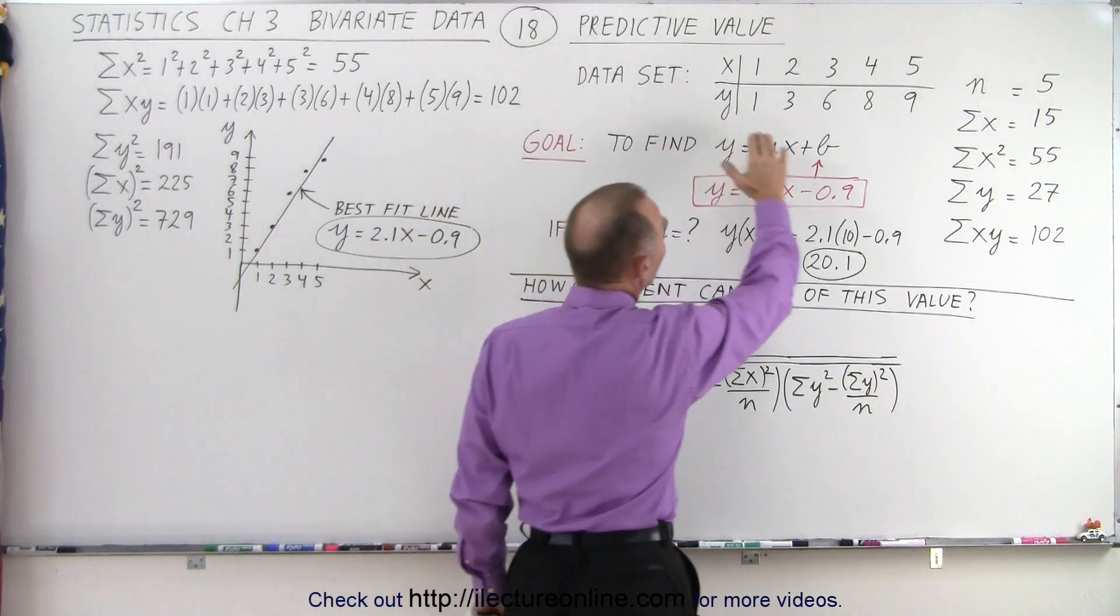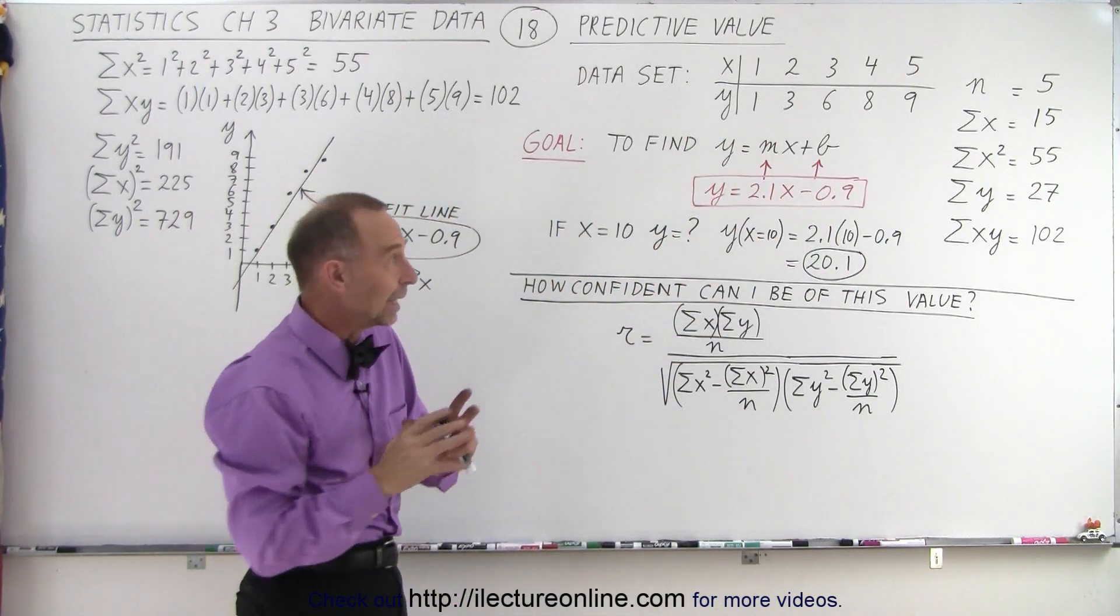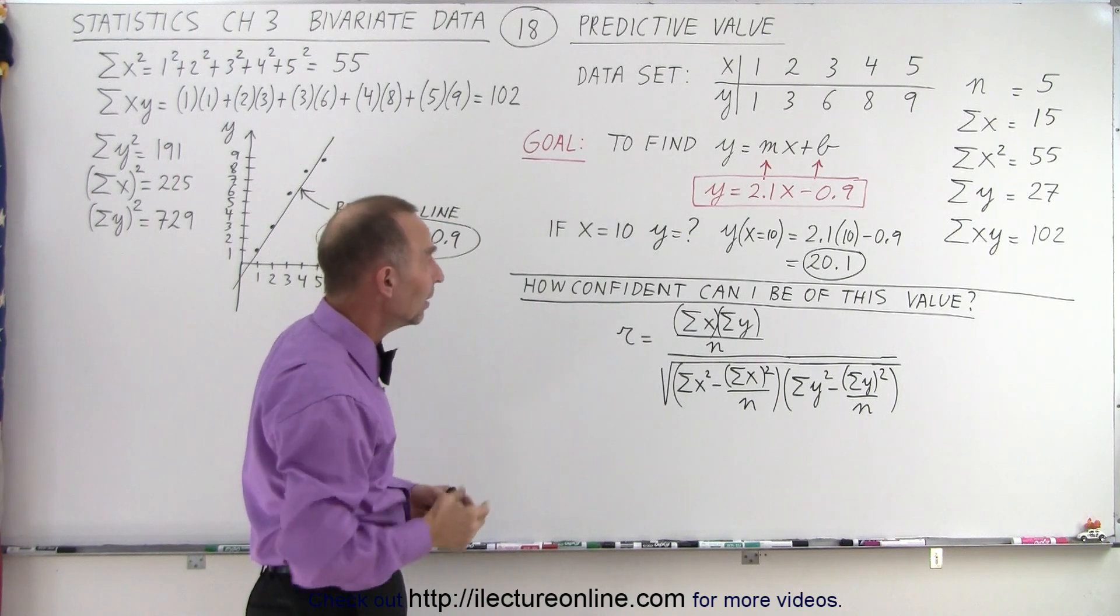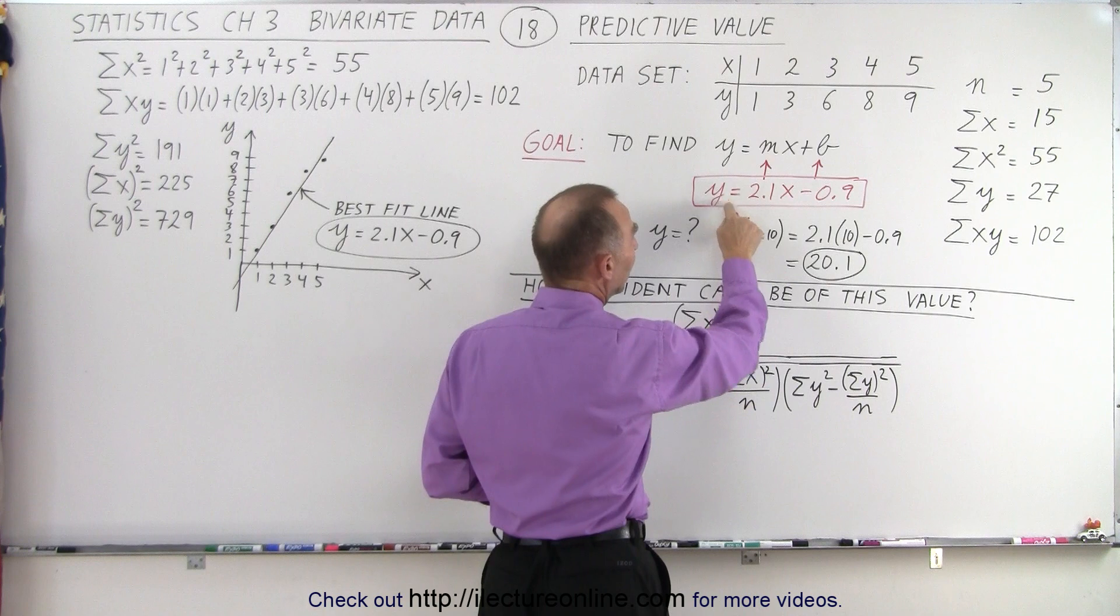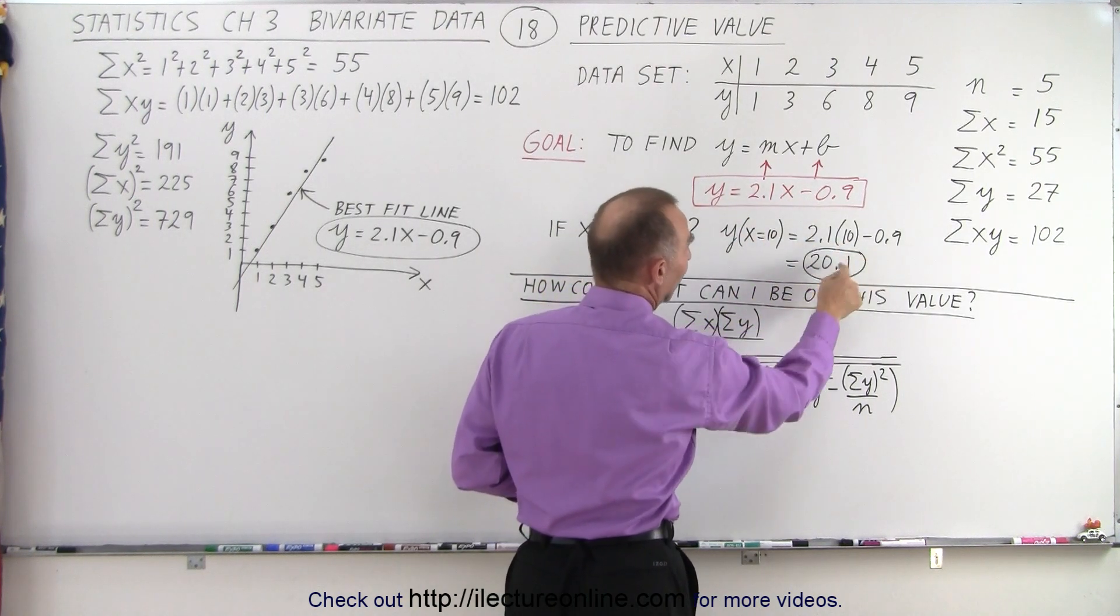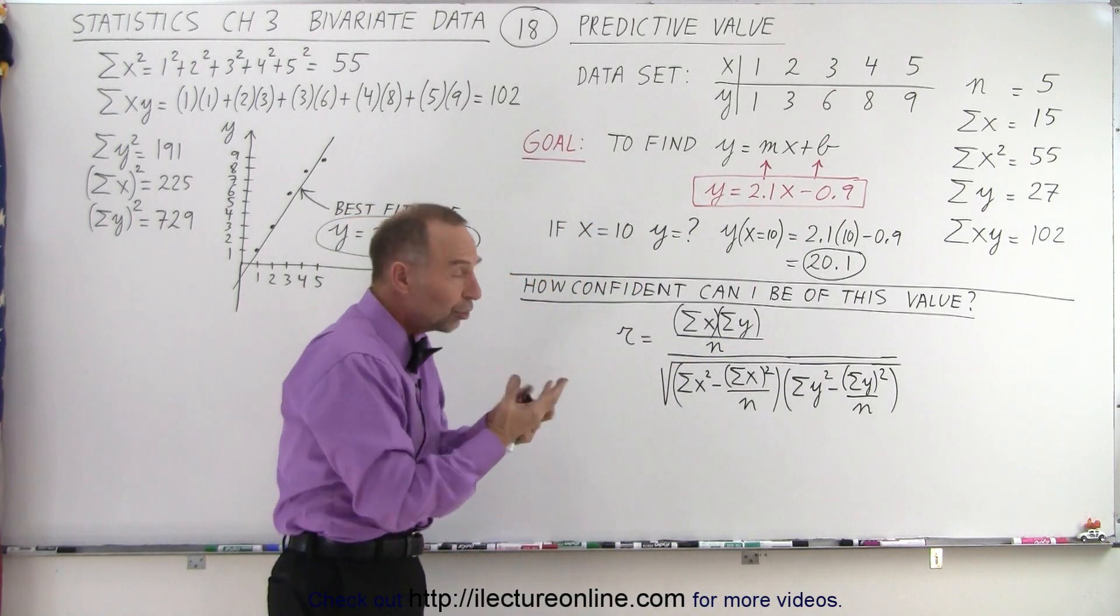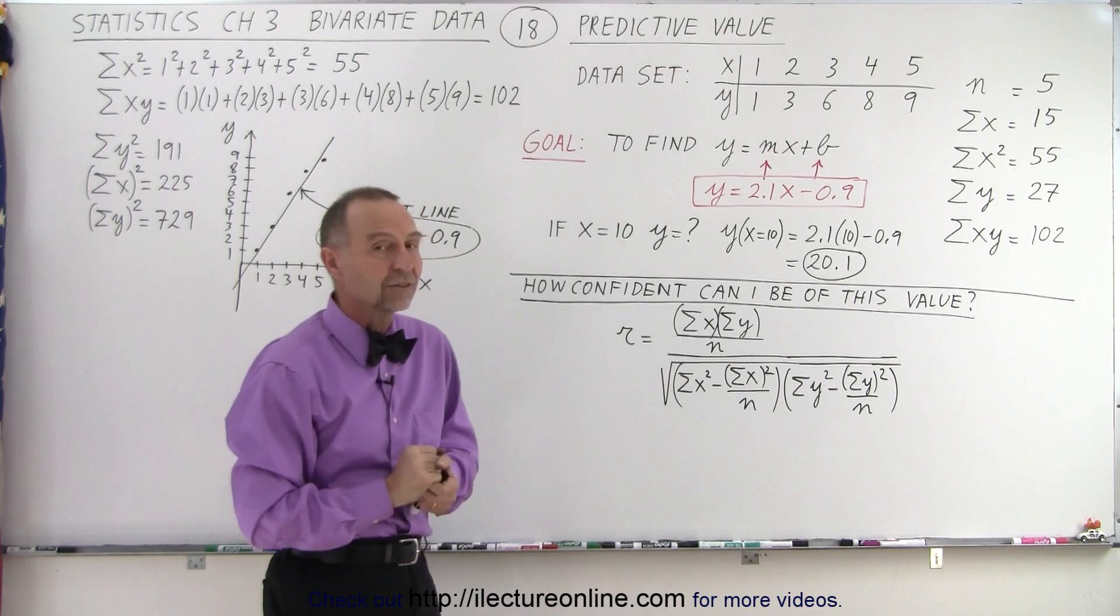What would be the corresponding value for y? Now, if all we had was this, it would be difficult to make that assessment. But now that we have that equation, that best fit line, all we need to do is plug in 10 for x and evaluate the value for y. So 2.1 times 10 minus 0.9 is 20.1. So now we find the corresponding value for y given a particular value for x.